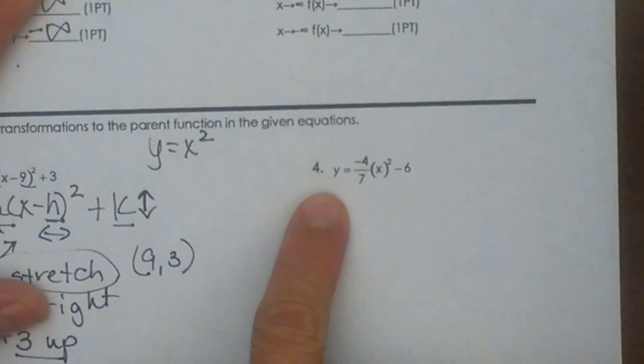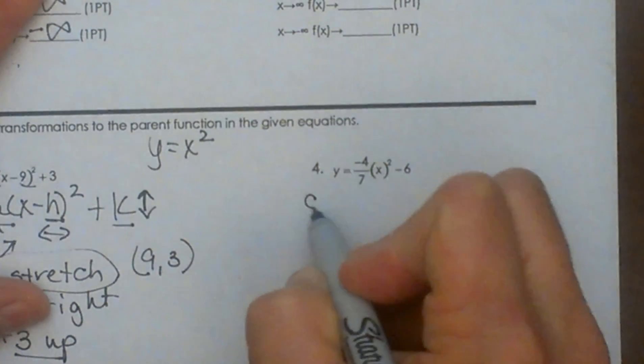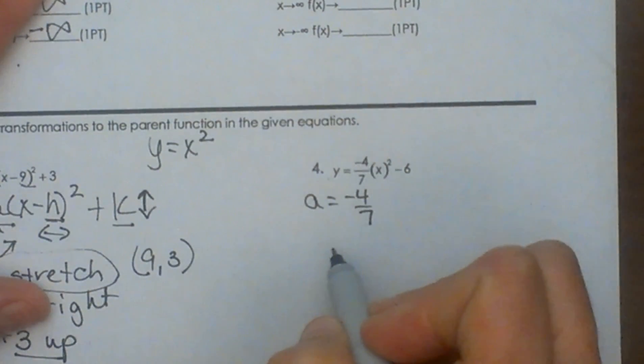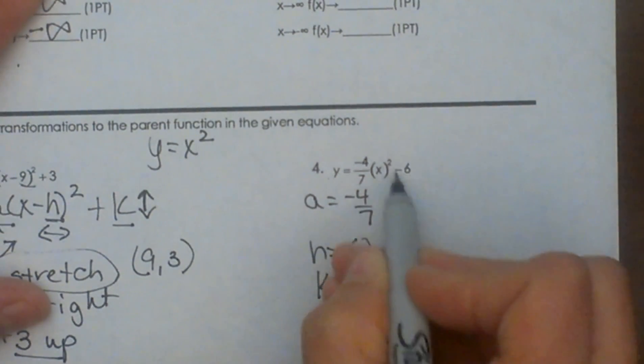So let's look at a second one. Our a value is negative 4 sevenths. Our h, what's being added to x in the parenthesis? Nothing, so it's 0. And our k is negative 6.